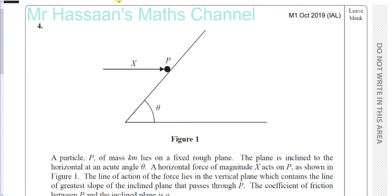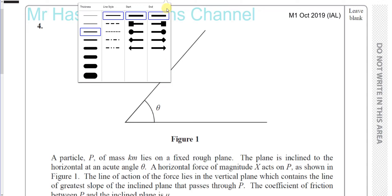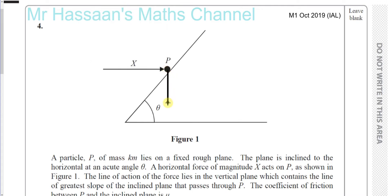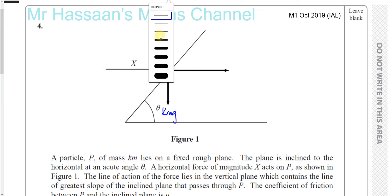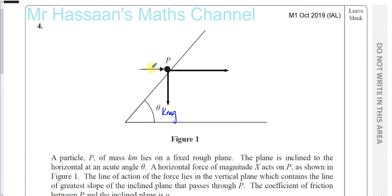Let's first of all start by putting all the forces on this diagram. We have the weight acting down, which is Kmg, so the force acting down due to the weight is Kmg. You also have this horizontal force. What I like to do is, when there's a force acting in this direction, I like to draw it on the other side of it - it just makes it a lot easier to visualize when you're resolving the forces. So I always redraw the force in the same orientation but on the other side. That's X Newtons acting in that way.